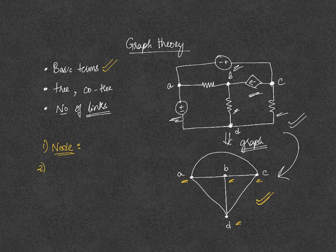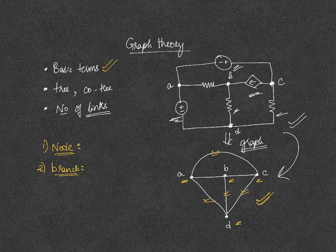Next, you have a branch. A branch is nothing but one simple element between any two nodes. So A-D is one branch, B-D is one branch, C-D is one branch, and A-C is one branch. So it is the line between any two nodes.